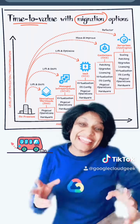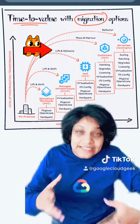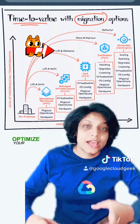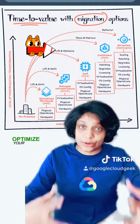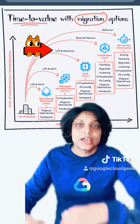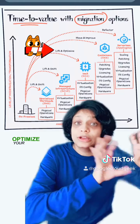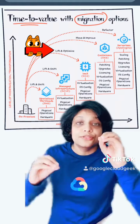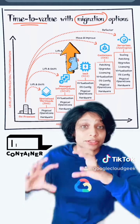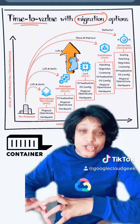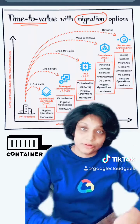The second is lift and optimize, where you're making some changes. Infrastructure as a service is a great option for this — you're using virtual machines and putting them into the cloud. Third, you're converting your application into containers and moving those containers into the cloud.